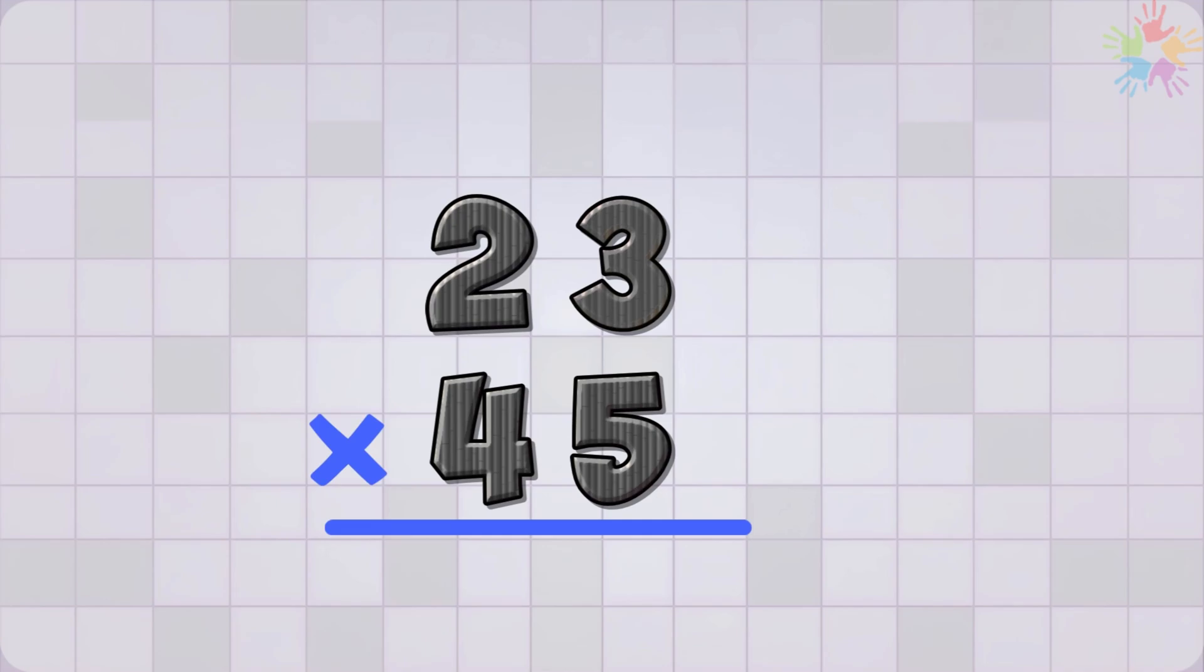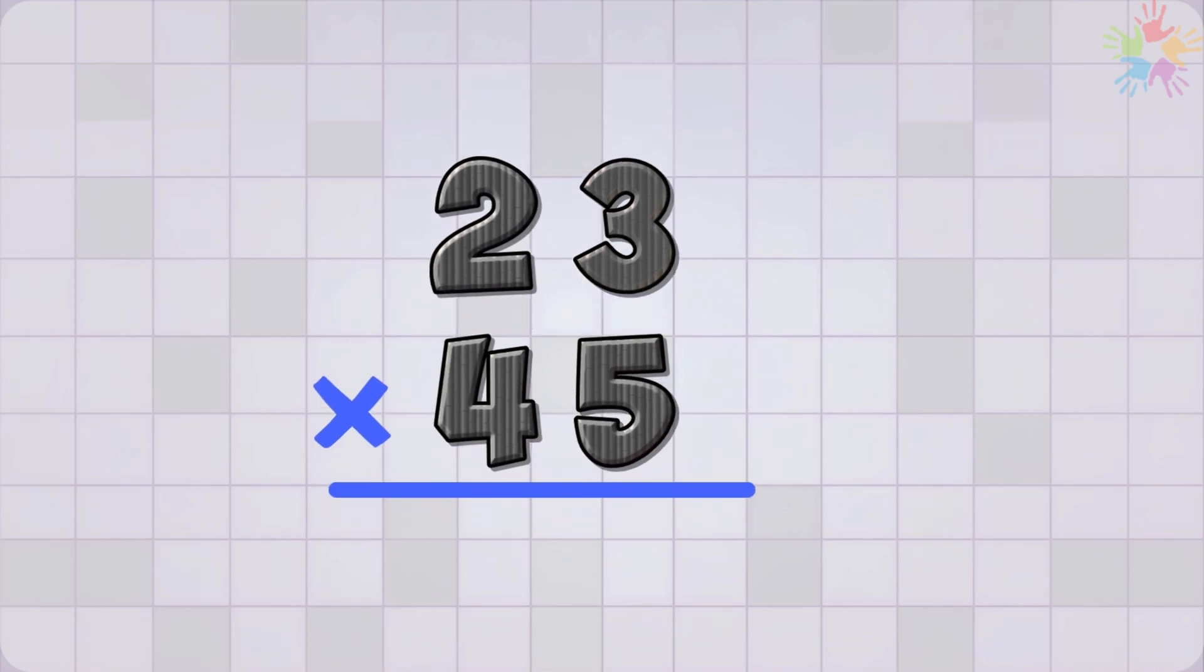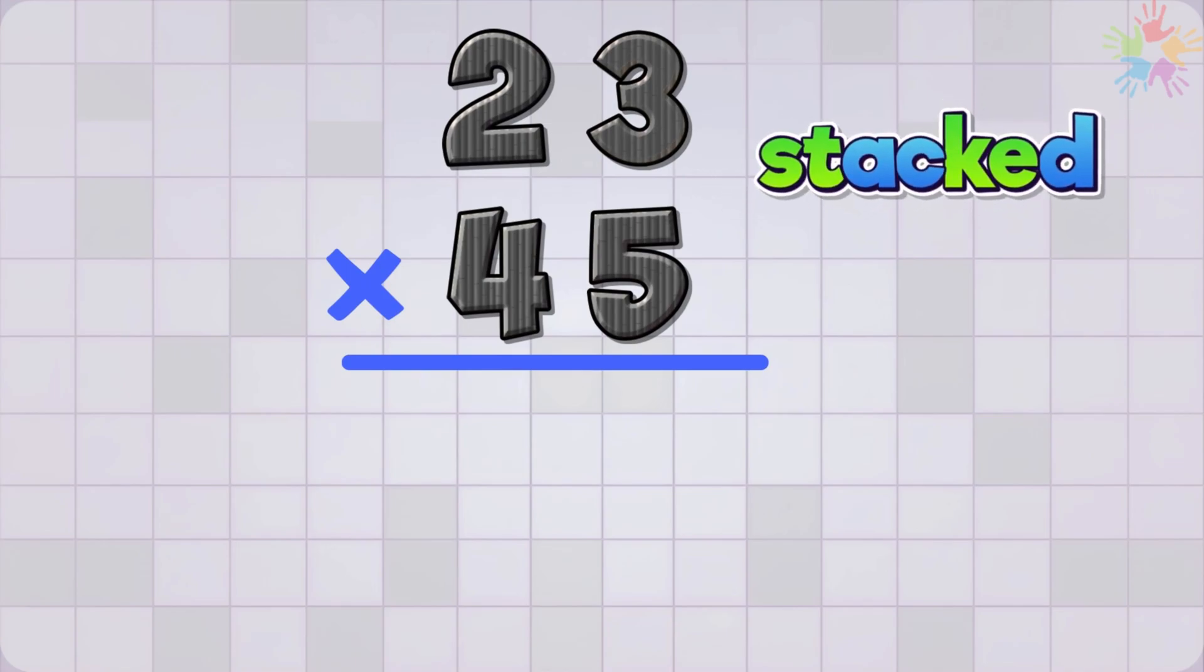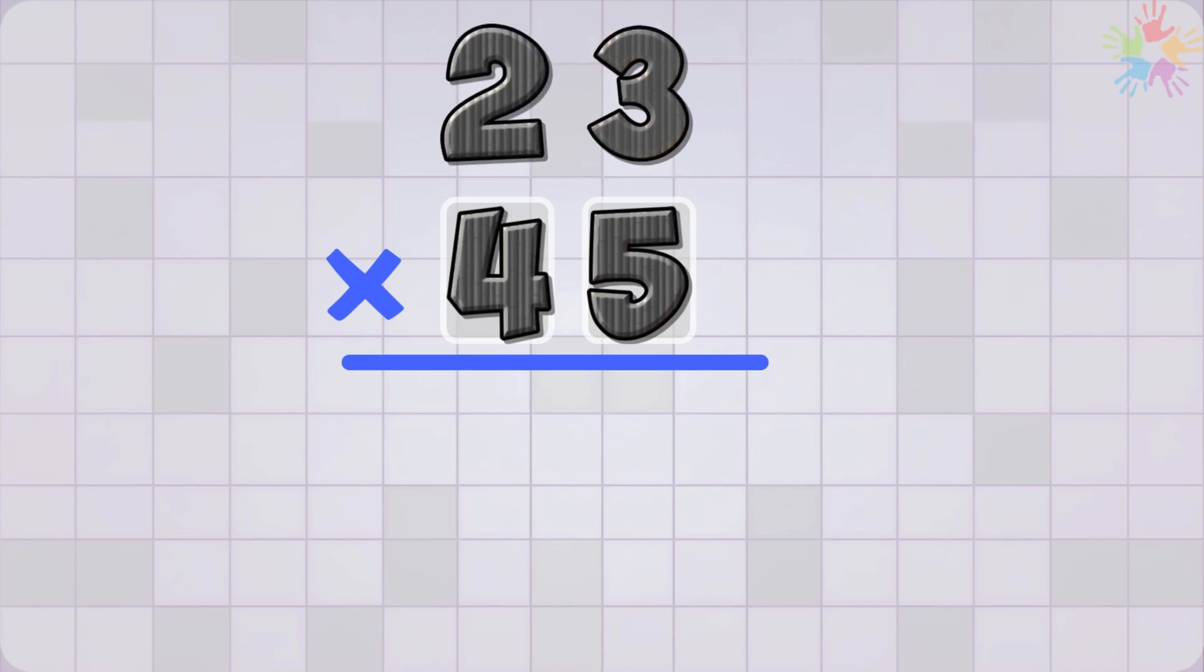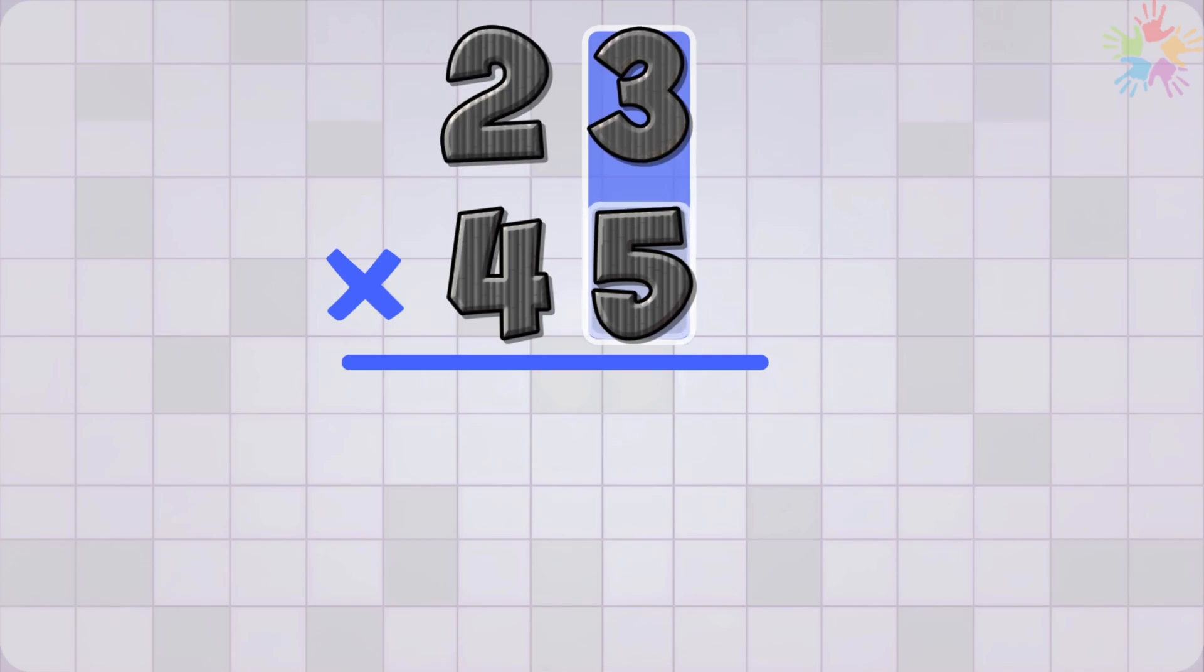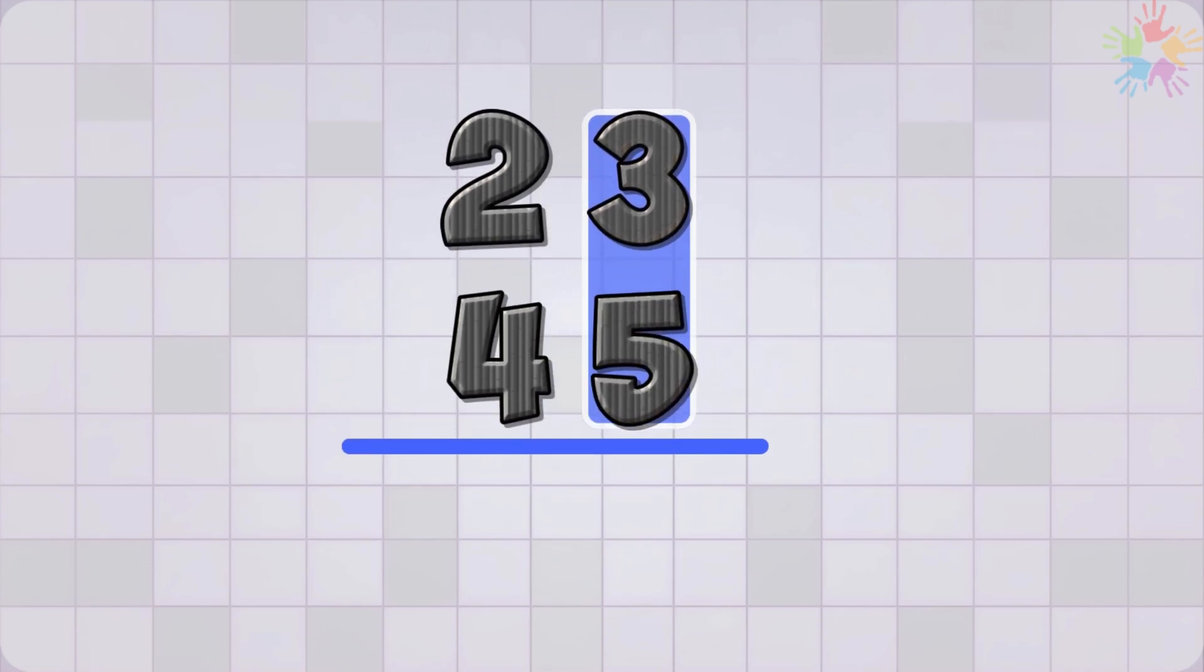Once it is stacked nicely, then we have to multiply each bottom number by 3 and 2, the digits in the top number. Let's start with 5, which is in the ones place. Multiply it by each digit in 23. First, 5 times 3 equals 15.